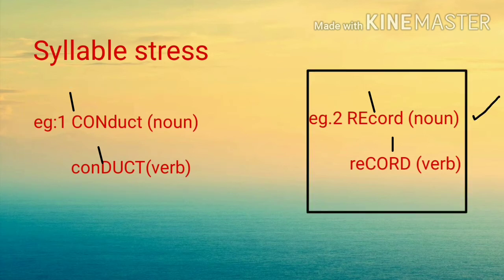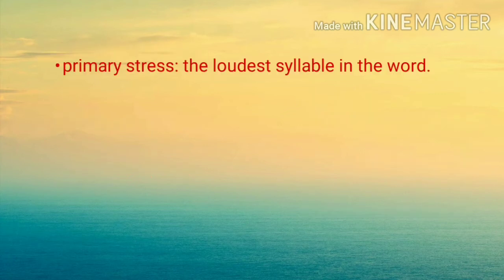'Record' is used as a noun where stress is on the first syllable; 'record' is used as a verb where stress is on the second syllable.